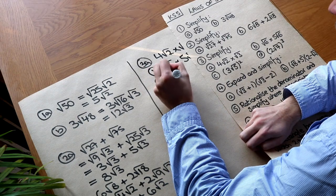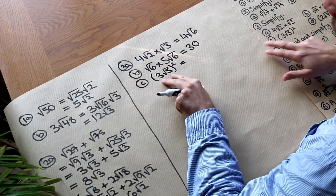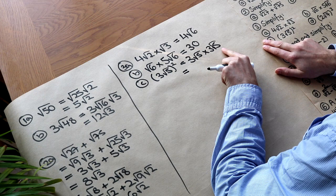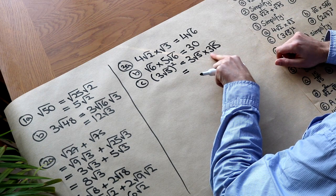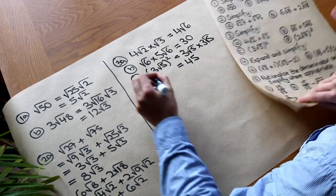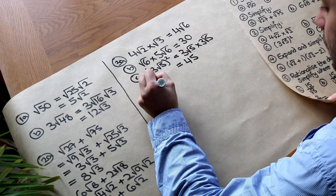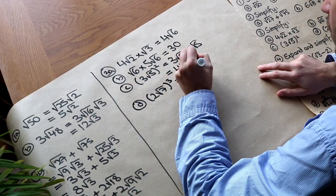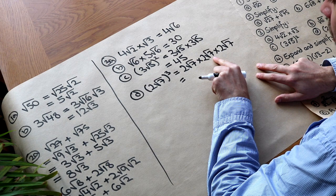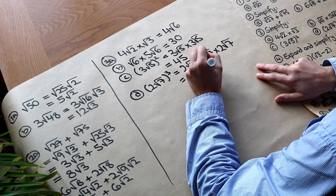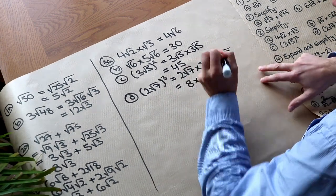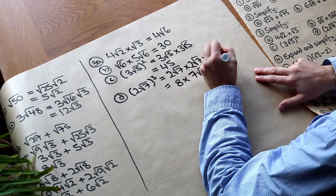For 3 root 5 squared, we write it as 3 root 5 times 3 root 5. Root 5 times root 5 is 5, and 3 times 3 is 9, so 9 times 5 is 45. For 2 root 7 cubed, we write it out three times. Root 7 times root 7 is 7, times another root 7 gives 7 root 7. Then 2 times 2 times 2 is 8. So 8 times 7 root 7 is 56 root 7.